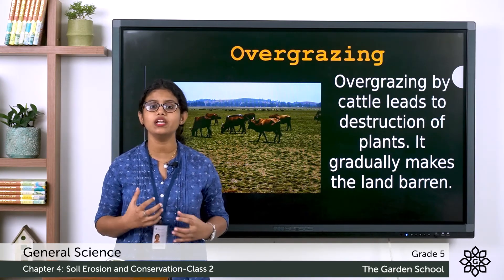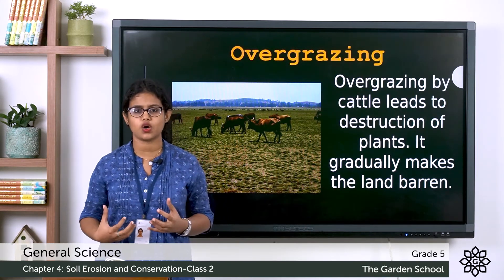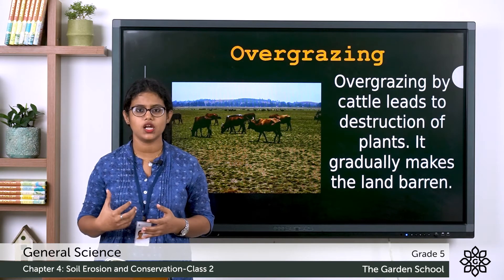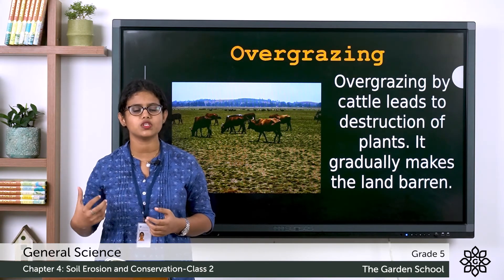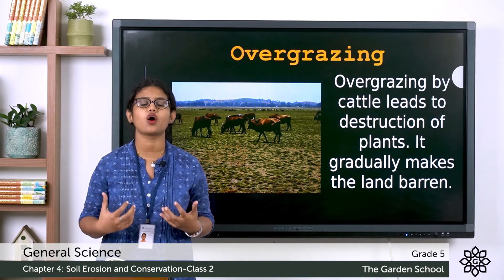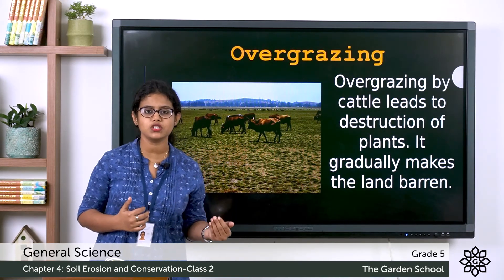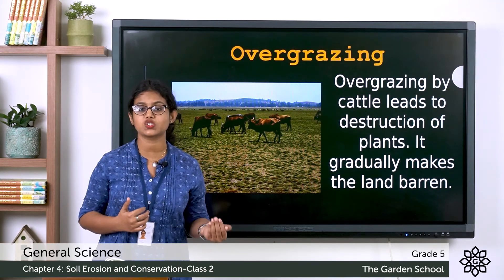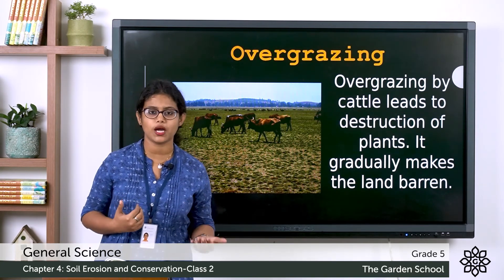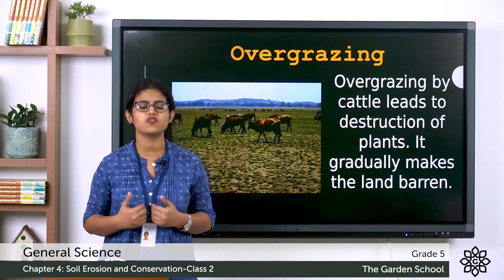So what did we learn today? We learned about soil erosion — a process by which the top layer of the soil, which is the outermost fertile layer where plants grow, is washed away by flowing water or blown away by wind. The causes of soil erosion include natural processes such as wind and water, and human activities such as deforestation and overgrazing.